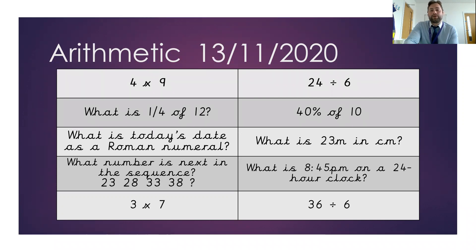And then our final day is 13th. We have 4 times 9. We have a quarter of 12. What is today's date as a Roman numeral? So that'd be a bit of a challenge. So good luck with that one. What number is next in the sequence? We've got 23, 28, 33, 38. Then we have 3 times 7. We have 24 divided by 6.